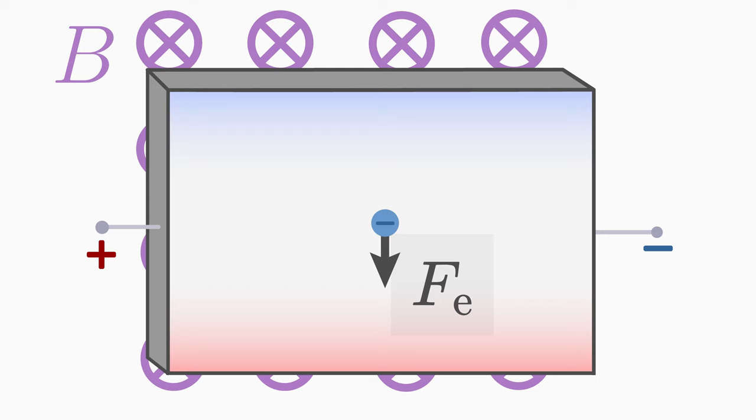Thus, the electric force on an electron acts exactly opposite to the magnetic force. If the magnetic force is greater than the electric force, the electron moves upwards. This deflection of electrons happens until an equilibrium of forces is established.